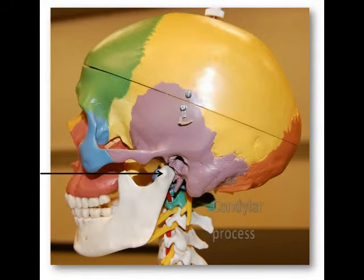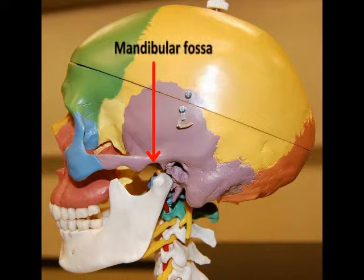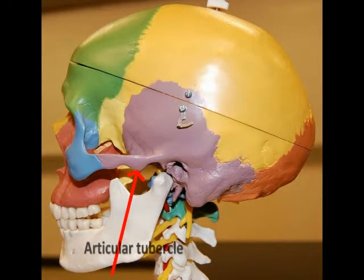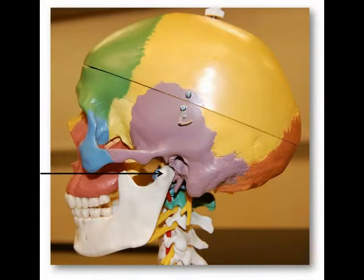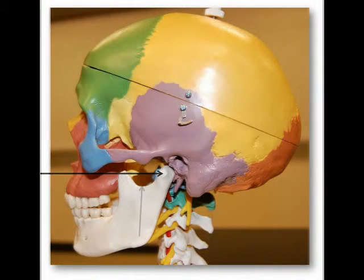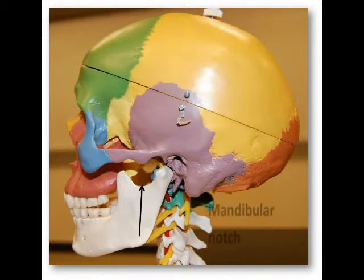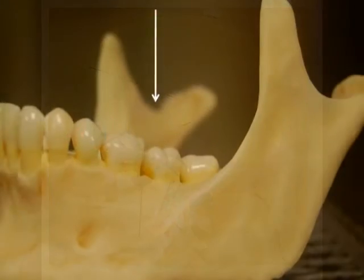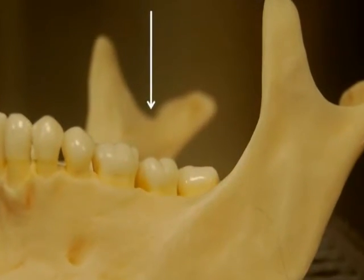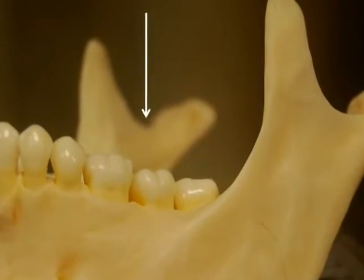The rounded condylar process articulates with the mandibular fossa and articular tubercle of the temporal bone to form the temporomandibular joint, or the TMJ. The mandibular notch is the curved cutout region in between the two processes.